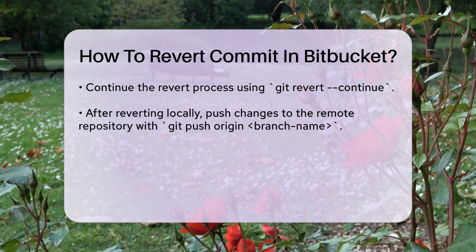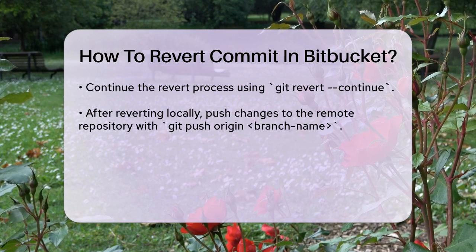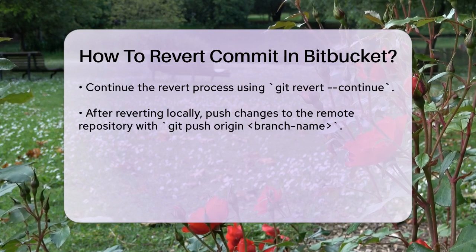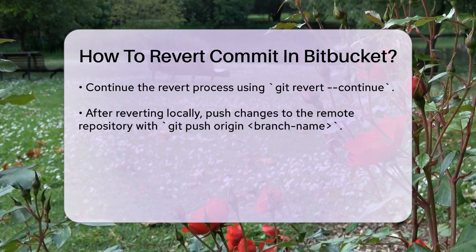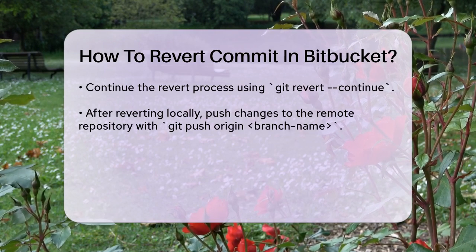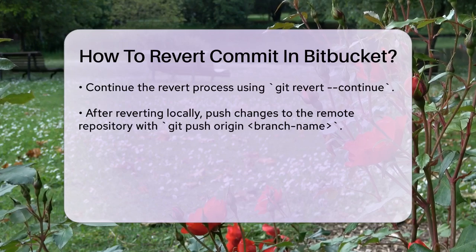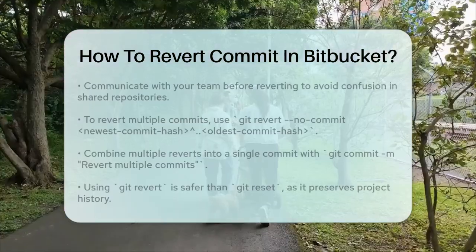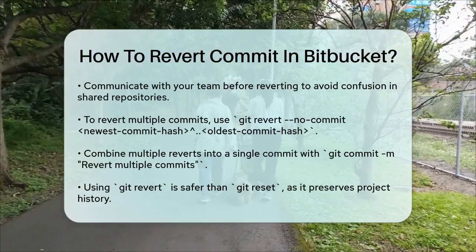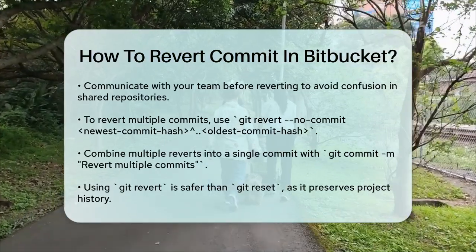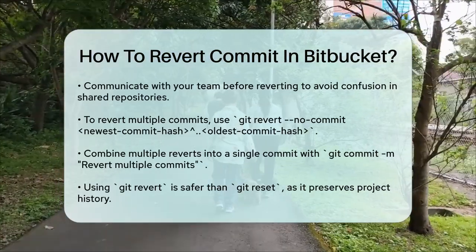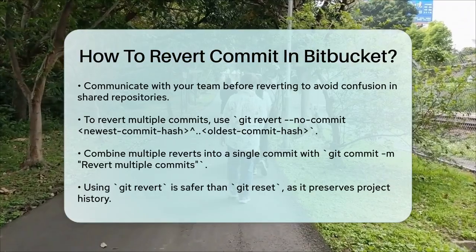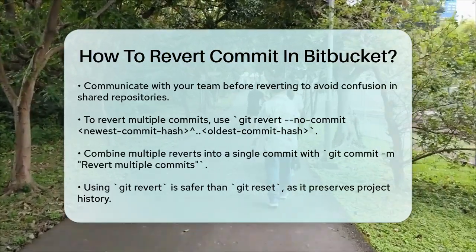If you need to revert multiple commits, you can specify a range of commits using the git revert command. For example: git revert --no-commit <newest-commit-hash>..<oldest-commit-hash>, then git commit -m "Revert multiple commits". This will revert all changes in the specified range and combine them into a single commit.